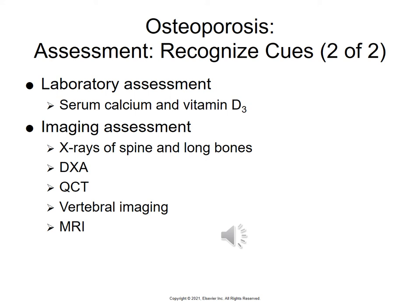For imaging, we do x-rays of the spine and long bones. The DEXA scan, or DXA, measures bone mineral density and bone mineral content. Patients do not need to fast for a DEXA scan but must remove all metallic objects. They lie supine, a photon generator and x-ray pass above and below the lumbar spine, the feet are placed on a brace that rotates the hip, and it takes about 15 minutes with no discomfort. This is what computes the T-score.